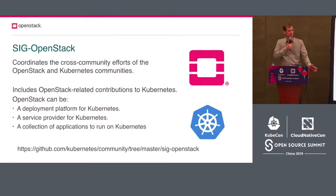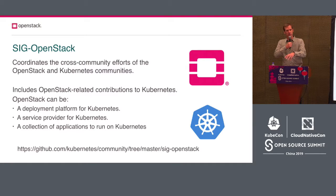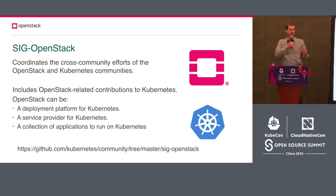OpenStack can also be a service provider for Kubernetes — for example, an authorization provider or a storage provider. Keystone has a webhook that connects to Kubernetes RBAC and allows you to use Keystone to manage your users and projects within a Kubernetes cluster. Similarly for Cinder, we have storage drivers that plug directly into Kubernetes using a CSI interface, giving you the power of over 80 storage drivers backed by Cinder without having to pull in an entire OpenStack cloud.